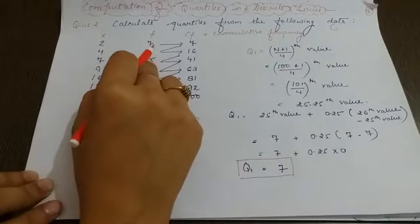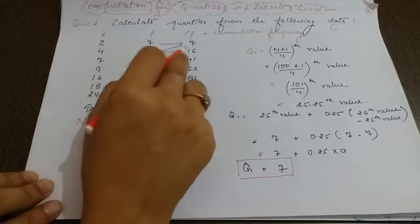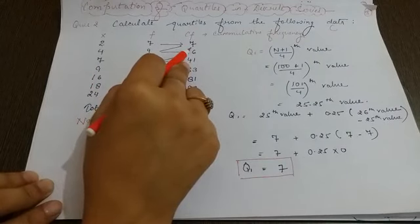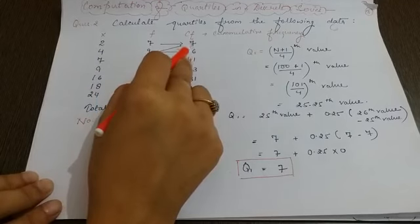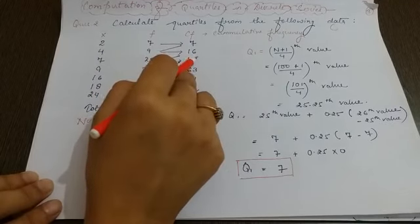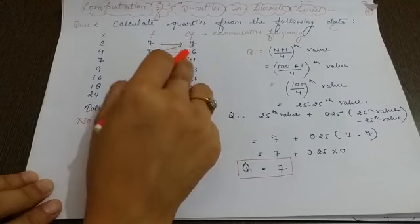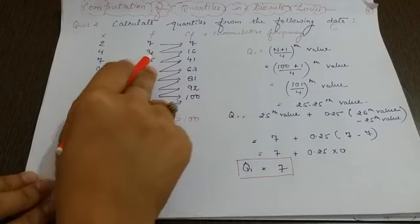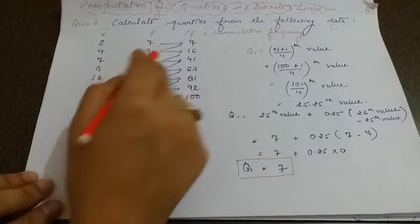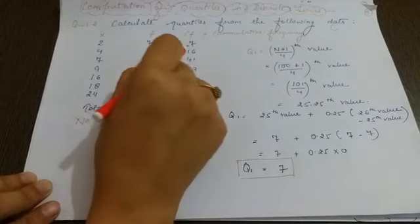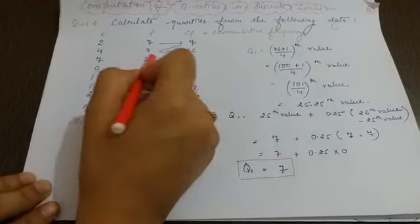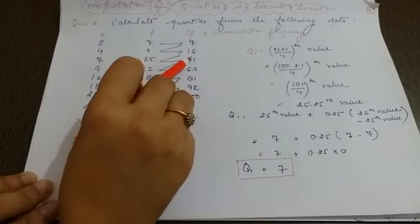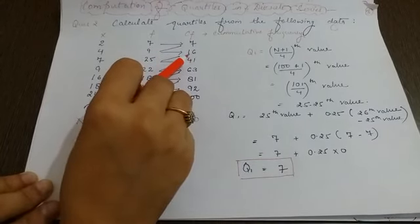Now in this case, the first frequency that is given, the cumulative frequency is the same, that is 7. Now second cumulative frequency, in order to obtain the second cumulative frequency, you need to add this value over here, the second frequency. So the first cumulative frequency, you need to add the second frequency, and that will give you 16. That is the second cumulative frequency.